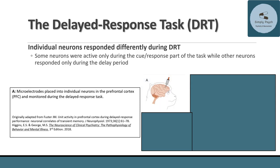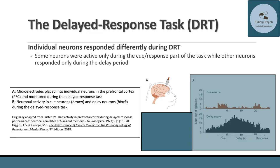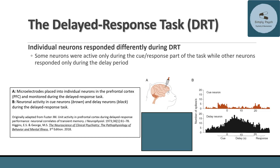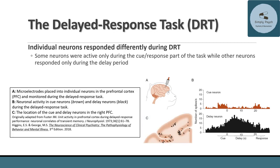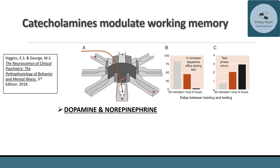After the studies, the researchers sacrificed the monkeys and identified the locations of the micro-electrodes. The cue neurons and delay neurons were in different, clustered regions. The delay neurons were more numerous than cue neurons, emphasizing the importance of holding a thought in working memory. These delay neurons appear to form part of the network of working memory — and when monkeys were distracted during the delay period, delay neurons were less active and the monkeys made more errors.